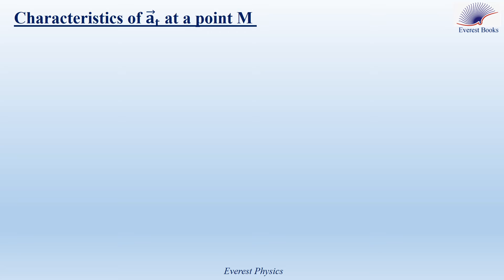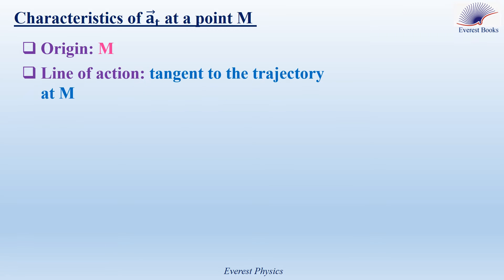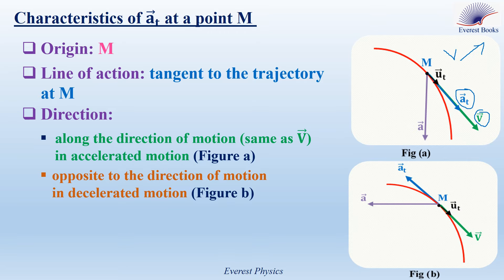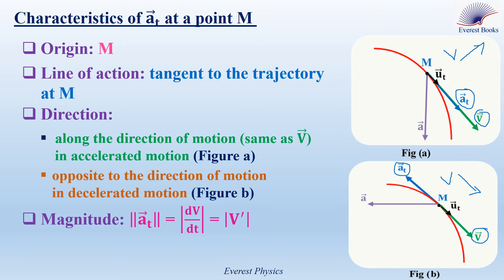The tangential acceleration is a vector quantity, so it has four characteristics at a point M. Origin: the point M itself. Line of action: it is tangent to the trajectory at point M. Direction: we have two cases. First case — it is along the direction of the motion, or the same as v, in accelerated motion, as in figure A; a_T and v have the same direction when v increases with time. Second case — the direction of a_T is opposite to the direction of motion in decelerated motion, as in figure B; a_T and v have opposite directions when v decreases with time. Finally, its magnitude is given by the derivative of the speed with respect to time, and the magnitude is always positive.